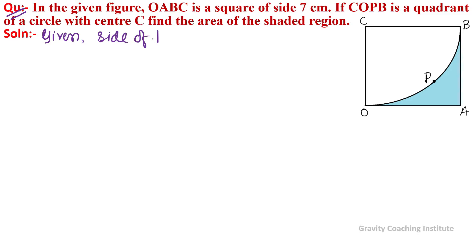Given: side of the square is 7 centimeters, and the radius of the quadrant COPB is also 7 centimeters.